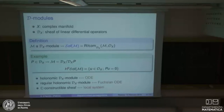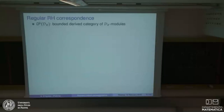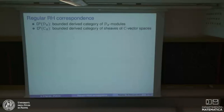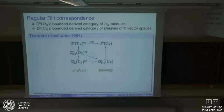Kashiwara proposes this replacement: instead of Fuchsian ordinary differential operators, consider regular holonomic D-modules; instead of local systems, consider constructible sheaves. In this setting it is better to work in derived categories because you need higher cohomology of the solution complex. Denote by D^b D_X the bounded derived category of left D-modules — note that D is a non-commutative ring, so left and right are not the same. Denote by D^b_c(X) the bounded derived category of sheaves of C-vector spaces.